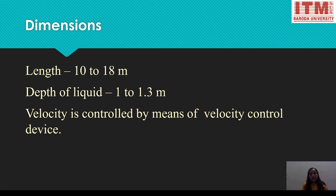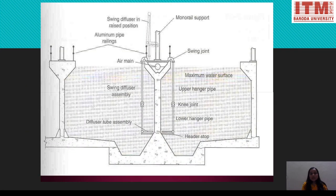Design criteria for the grit chamber include: length of 10 to 18 meters, liquid depth of 1 to 1.3 meters, and velocity controlled by a velocity control device. The cross-section with instrumentation shows the main operating center piping, and the maximum water surface is always maintained below the freeboard level.